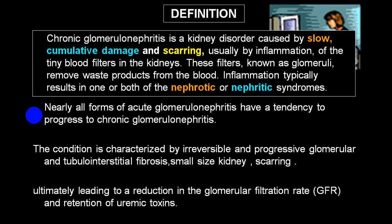The inflammation results in either nephritic or nephrotic variety of glomerular damage. All forms of acute glomerulonephritis have a tendency to progress into chronic glomerulonephritis. The condition is characterized by irreversible progressive glomerular and interstitial tubular fibrosis, ending in a small scarred kidney. This results in reduction in GFR, retention of uremic toxins, electrolyte imbalance, protein loss, anemia, elevation of uric acid, and calcium imbalance.